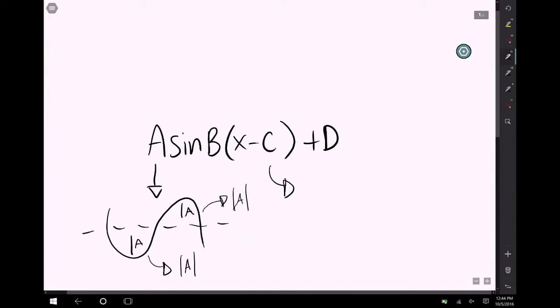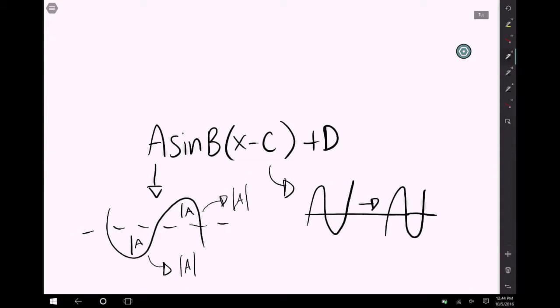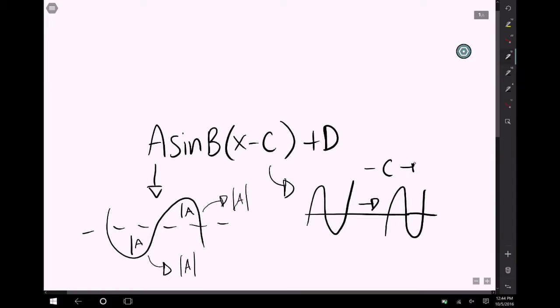C is going to define how far left or right the wave will shift, like so. But in fact, C is going to be opposite. If you have negative C, it is going to move to the right. And if you have positive C, it will move to the left.